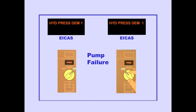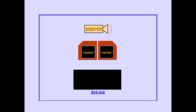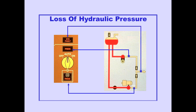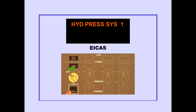If the demand pump has failed, the hydraulic pressure demand message will remain displayed and the low pressure light will remain illuminated. Rotating the demand pump selector off prevents possible pump damage and contamination to the system. The ICAS caution message, Hydraulic Pressure System, is displayed when there is a loss of hydraulic system pressure. When there is a loss of hydraulic system pressure, the system fault light, demand pump low pressure light, and engine pump low pressure light illuminate. Rotating the demand pump selector off and pushing the engine pump switch off prevents possible damage to the pumps and contamination to the system.